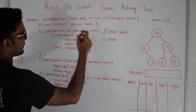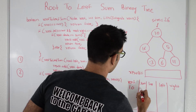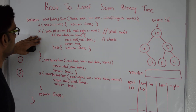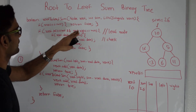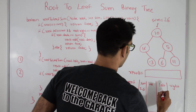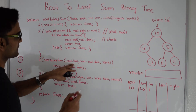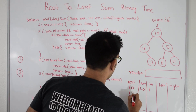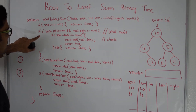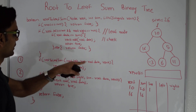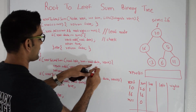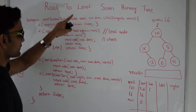We start with root equal to node 10 and sum equal to 26. Root is not null, and node 10 is not a leaf, so we go into its left side from line 1, passing sum minus root data, which is 16, to node 10's left. Now root is the node with value 16 and sum is 16. It is not null and not a leaf, so we go into its left child, passing 16 minus 16 equals 0. That left child is null, so it returns false.